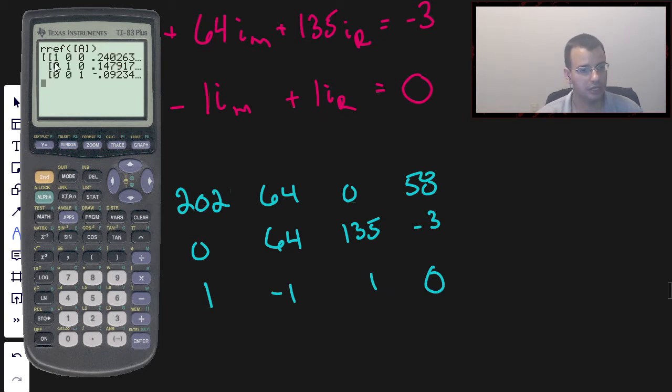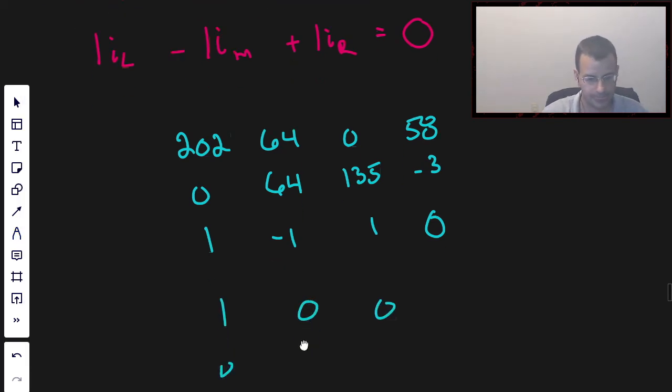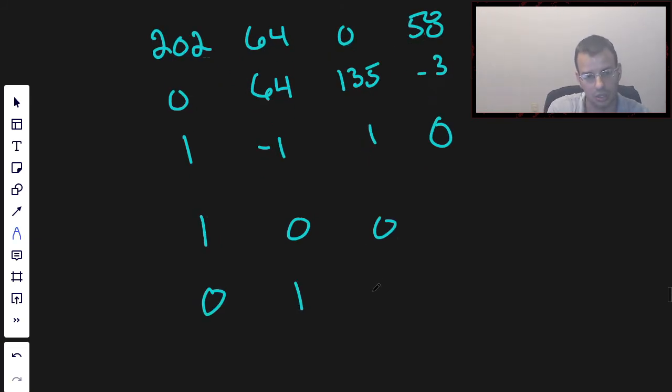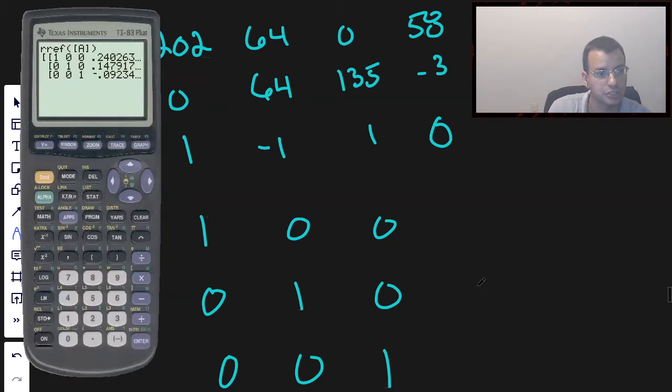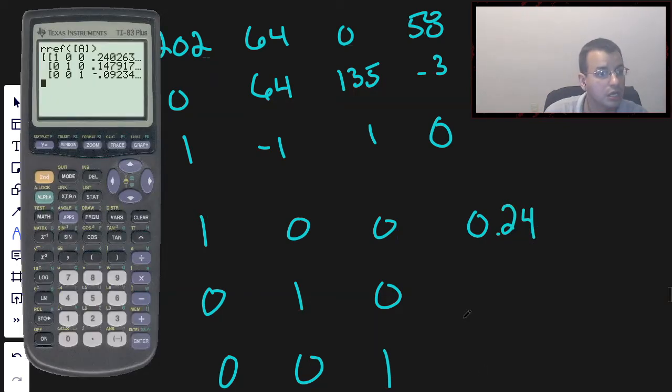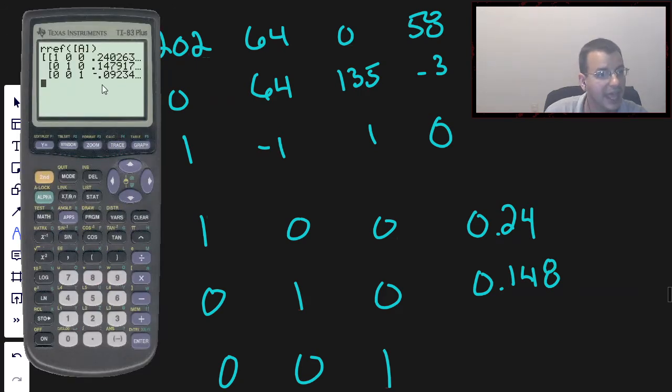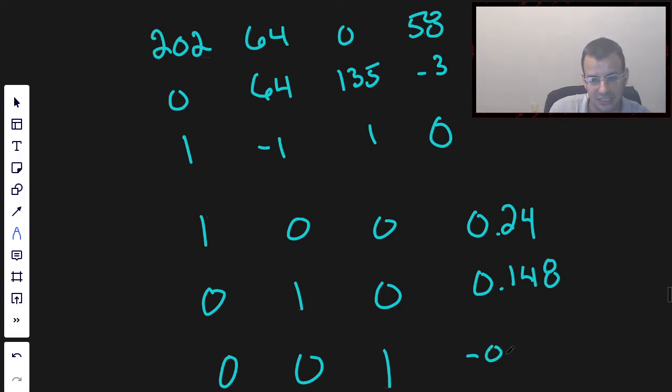And now it says that 1, so it's going to be 1, 0, 0. This is the identity matrix. 0, 1, 0, 0, 0, 1 is 0.24, 0.24, 0.148, 0.148, and negative 0.09. Negative 0.09 amps for all of these.